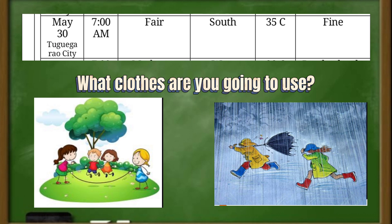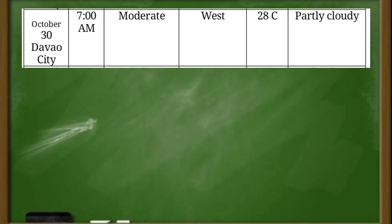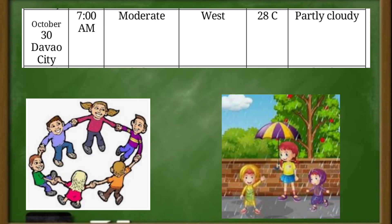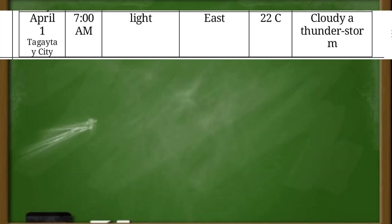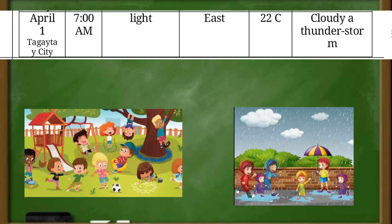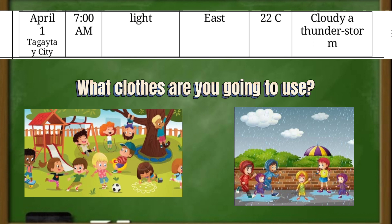What clothes are you going to use? You are correct! In Davao City, on November 30 at 7 o'clock in the morning, the wind speed is moderate, wind direction is west, the temperature is 28 degrees Celsius, and the sky condition is partly cloudy. So what are you going to use? You are correct! In Baguio City at 7 o'clock in the morning, the sky condition is cloudy with a thunderstorm, the temperature is 20 degrees Celsius, wind direction is east, and the wind speed is light. So what clothes are you going to use? You are all very good, children!